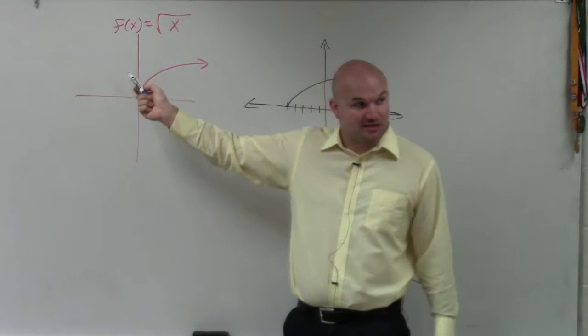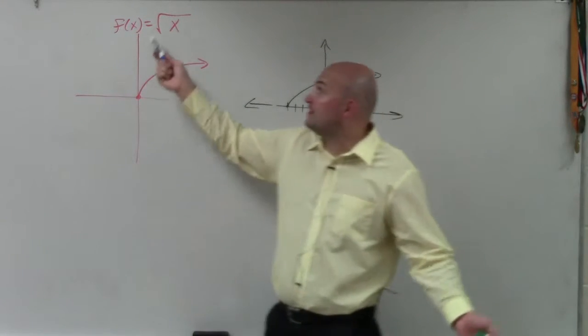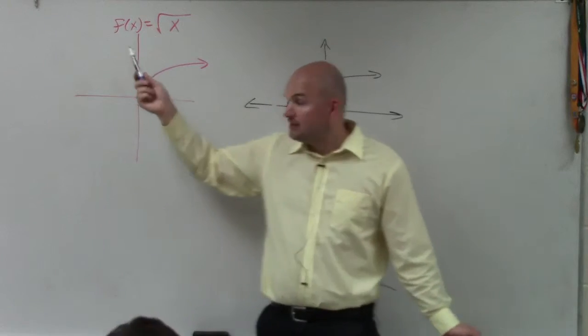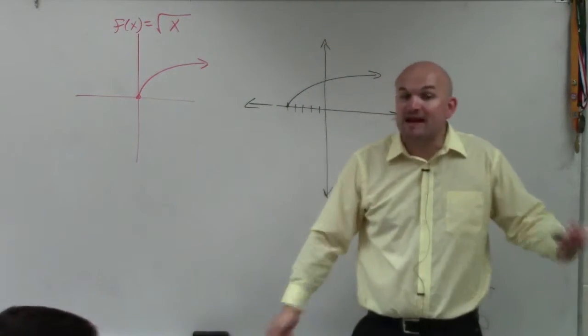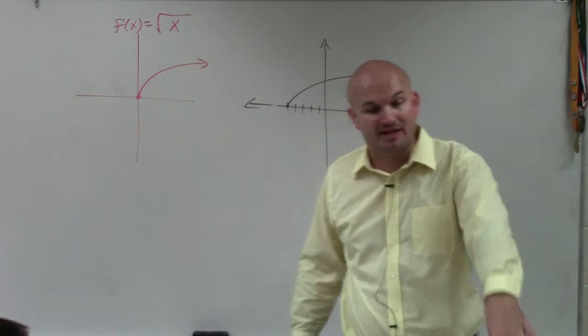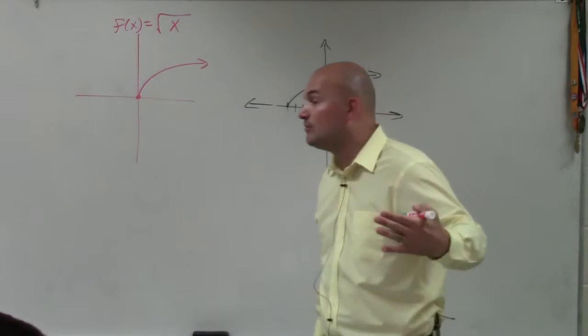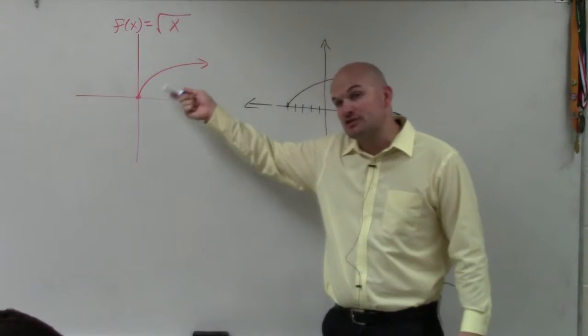This is what the square root of x looks like. So you could have taken a graph and plugged this in, square root of x, and then see that's what it looks like. Or if you remember the families of function, there were 12 of them on page 99 through 101. This is also one of those that shows up there.